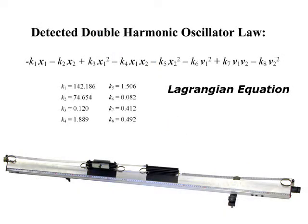The law found for the air track in this search was the Lagrangian equation, which relates to the system's kinetic and potential energy.